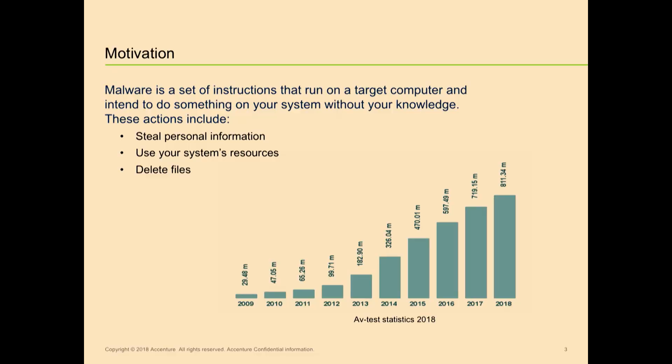A little bit about the motivation of why we are doing this. As all of you know, this is a graph from AV Test in 2018. In 2009, we only had 29 million malwares. This number has increased to 811 million malwares in 2018, showing an exponential growth in the number of malwares and the amount of data that we are working with.